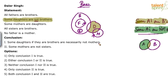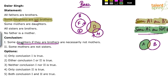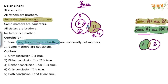Now look at the conclusions. The first one: 'some daughters, if they are brothers, are necessarily not mothers.' This is a definite type of conclusion. The focus is on daughters which are brothers — that common region between daughters and brothers. For better understanding, let's use a blue shading for daughters which are brothers. So the conclusion is: some blue are not mothers. If you look at the basic diagram, yes, it is satisfied — some blues are not M.